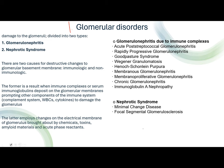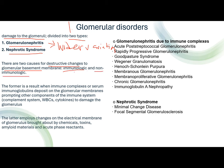Glomerular disorders primarily involve damage to the glomerulus or to the glomeruli. Your glomerular disorders are divided into two types: glomerulonephritis and nephrotic syndrome. Glomerulonephritis has a wider variation. In glomerular disorders, there are different causes of destructive changes to the basement membrane. The reason why there is damage to the glomeruli is because of two reasons: immunologic and non-immunologic.